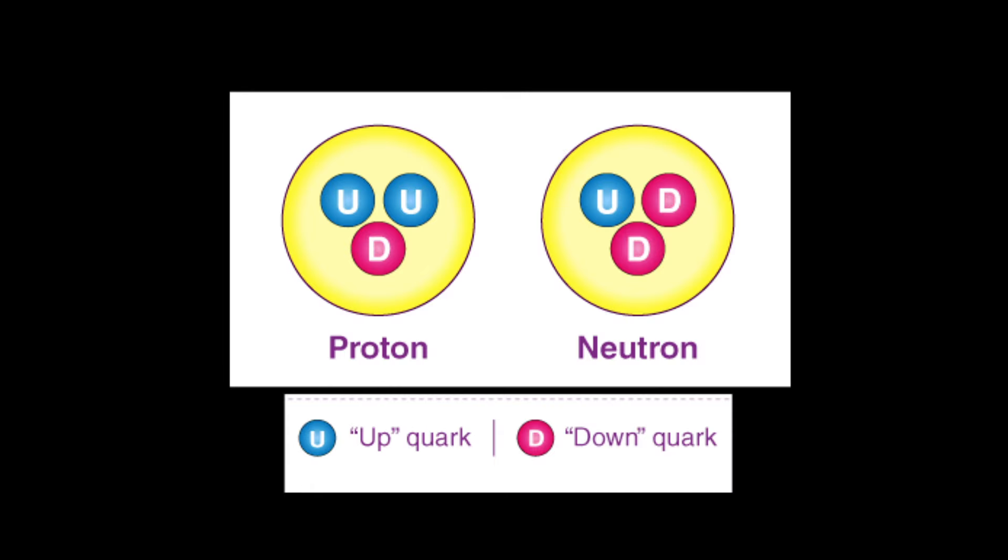The up and down quarks make up protons and neutrons, and they weigh 3 million and 5 million electron volts, respectively. Meanwhile, the top quark is 57,500 times heavier than the up quark.